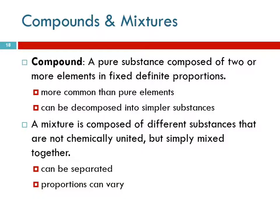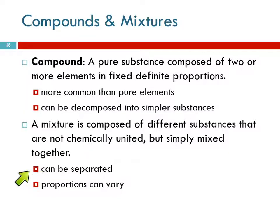Mixtures are different from compounds because in a mixture, you've got different substances that are just together — they're not bound together in a fixed arrangement. They can be separated physically, and the proportions can vary. In a compound, the proportions are always the same: water is always two hydrogens to one oxygen. In a mixture of hydrogen and oxygen gas, you could have a little bit of oxygen and lots of hydrogen, or it could be 50-50. The proportions can vary.